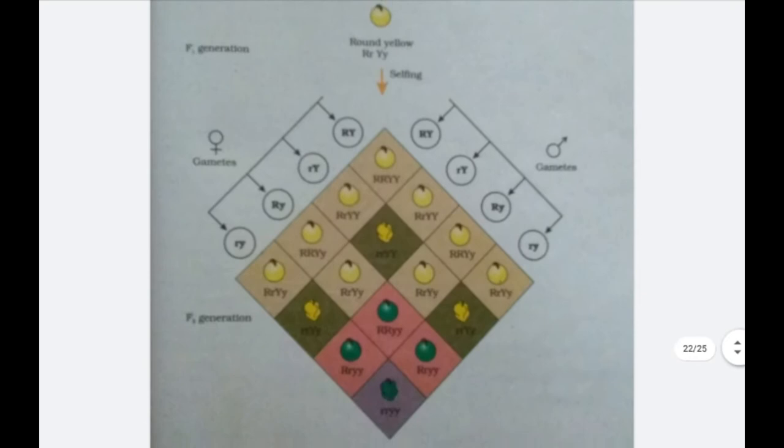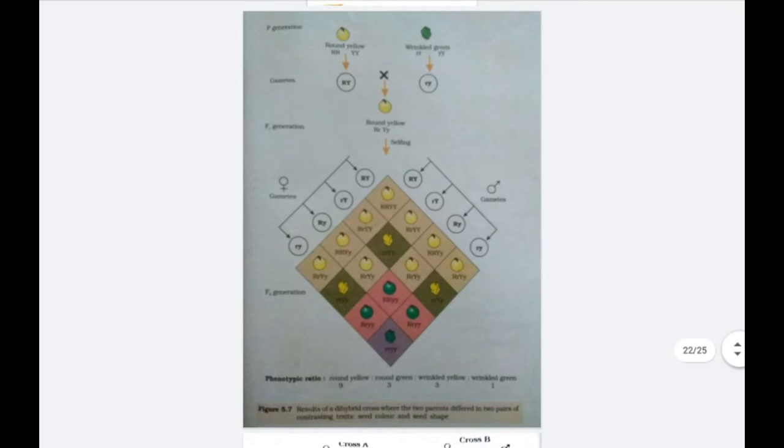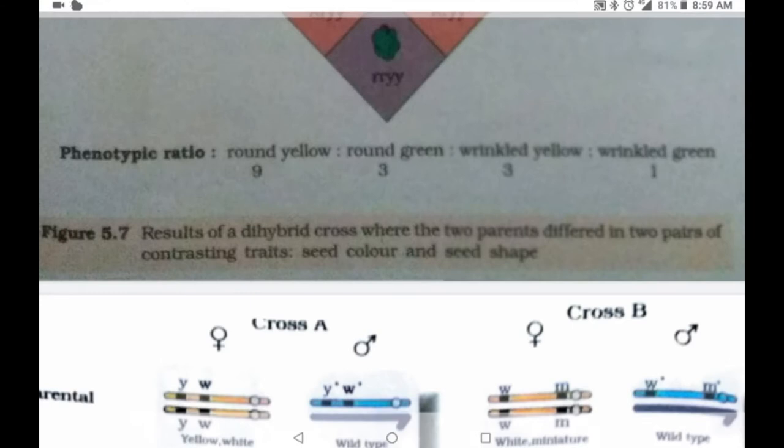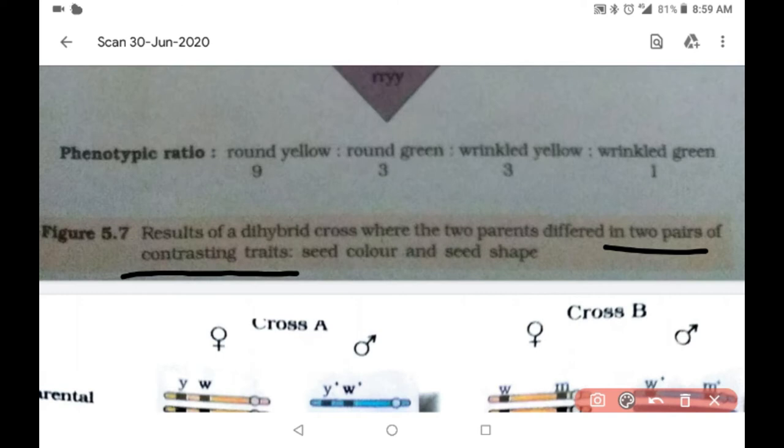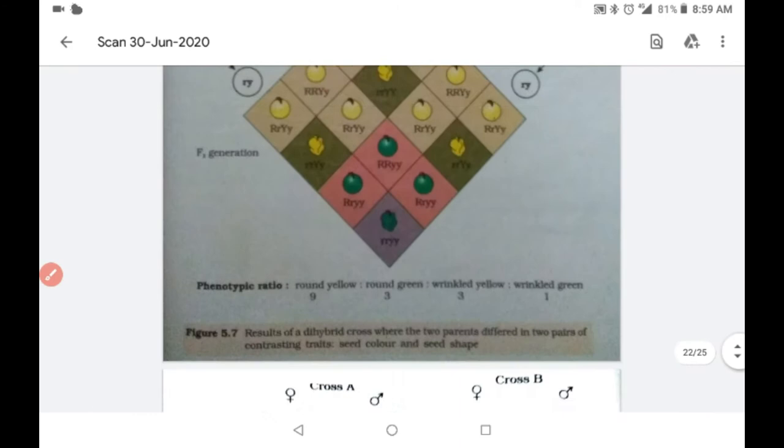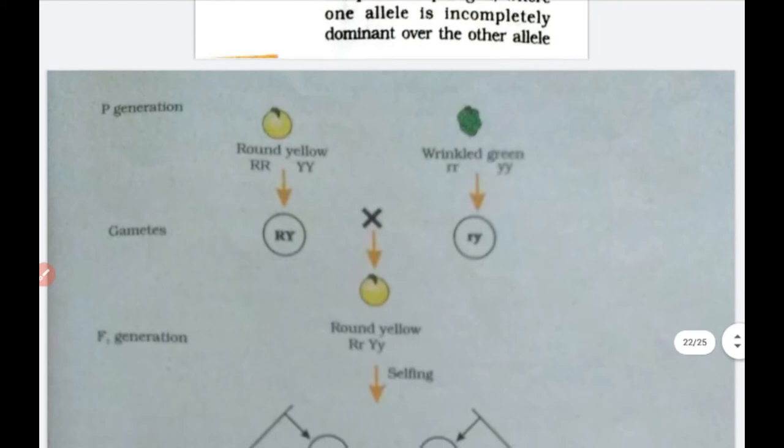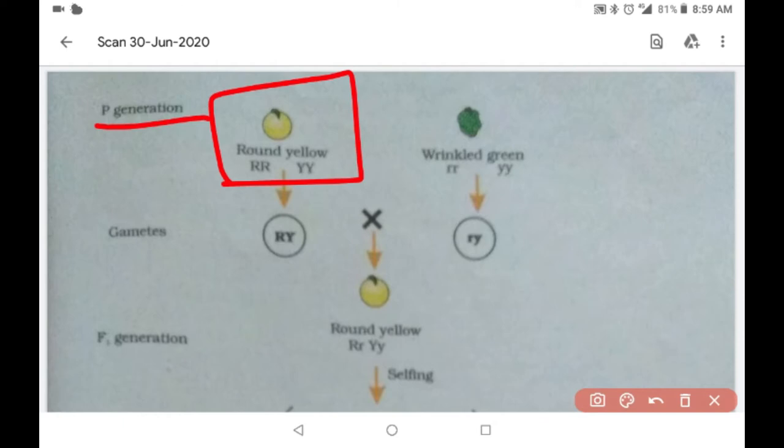We are on class 12th, figure 5.7. As you can see here, we have figure 5.7 that are the results of dihybrid cross between two parents different in two pairs of contrasting traits. That is, their seed color and seed shape. You have to keep in mind that this is a dihybrid cross. The parent generation has round yellow, that is both dominant characters, and we have wrinkled green right here, in which both the alleles of both the genes are recessive.